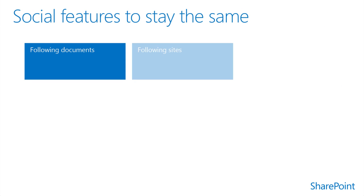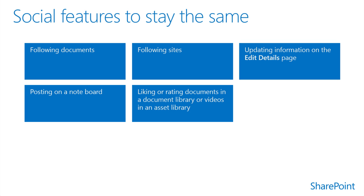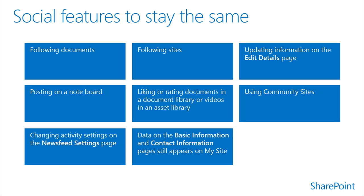Some SharePoint social capabilities should remain unchanged, such as following documents. Users can follow documents to bookmark the ones they are interested in, from the hover panel in OneDrive for Business, the hover panel in the library list view, the ribbon in a document library, and more. Users can see their followed documents by choosing OneDrive and then choosing followed documents. Users can also follow sites by choosing Sites on the top navigation bar, update information on the edit details page, post on a note board, like or rate documents in a document library and video from the asset library, use community sites, and change activity settings on the news feed settings page.